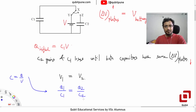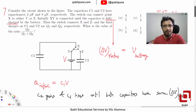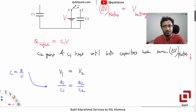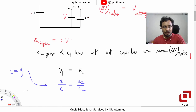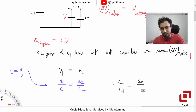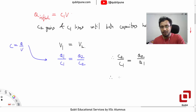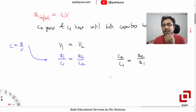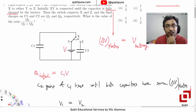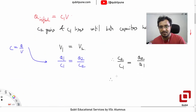The ratio we want is Q2 by Q1 plus Q2. From Q1/C1 = Q2/C2, we take the reciprocal and add, giving us expressions involving C1 and C2. Working through: 2 plus 8 upon 2, which gives us 10 upon 2 after manipulation.